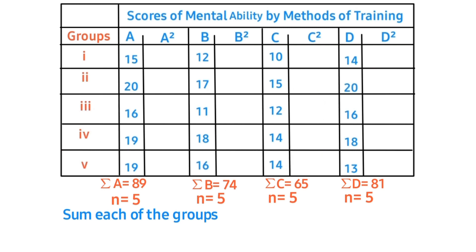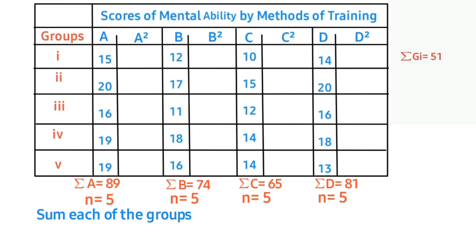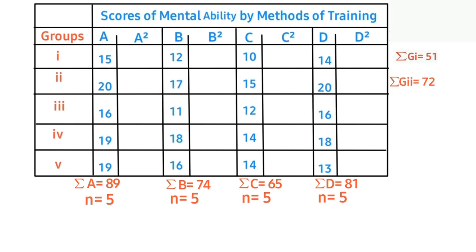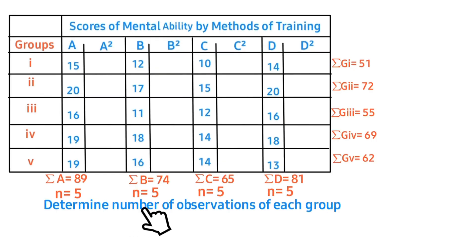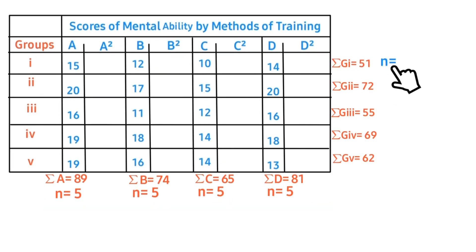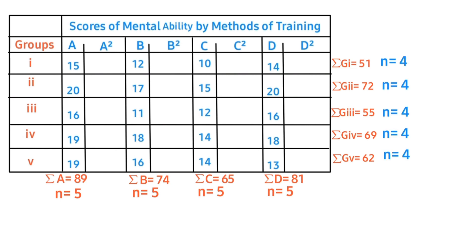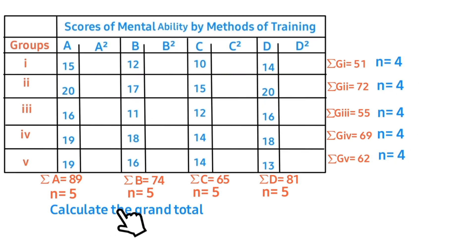For the first row we have 15 plus 12 plus 10 plus 14 equals 51. For the second group: 20 plus the remaining values. For the third group: 16 plus the remaining values. For the fourth group: 19 plus 18 plus the remaining values. For the last group: 19 plus 16 plus the remaining values. Determine the number of observations of each group, represented by n. For the first group we count one, two, three, four — and similarly for the rest of the groups.